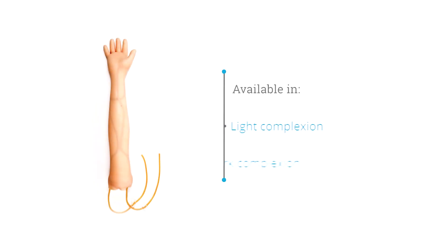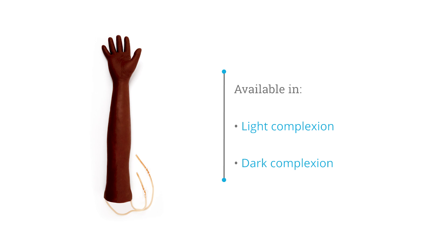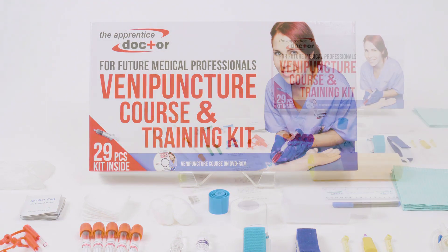The apprentice doctor phlebotomy training arm is available in either a light or a dark complexion skin color. The apprentice doctor venipuncture kit complements the arm.